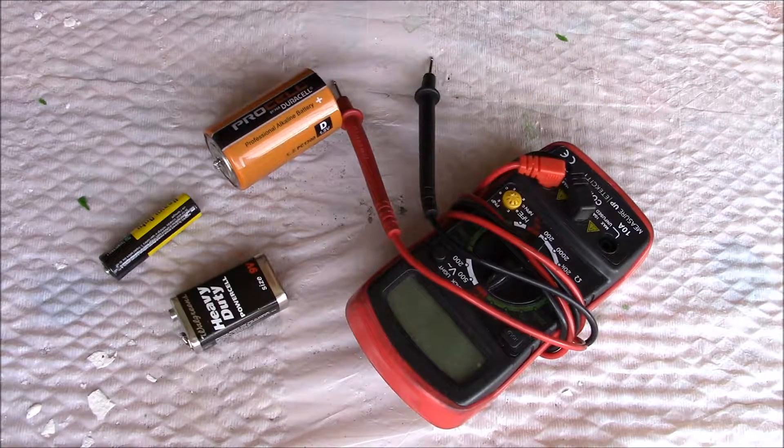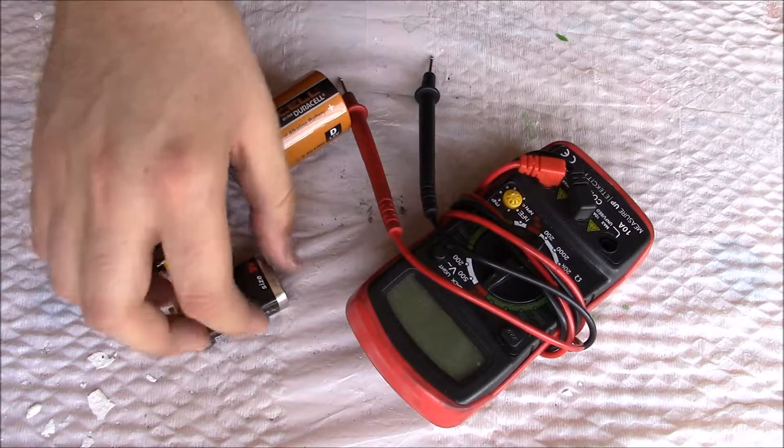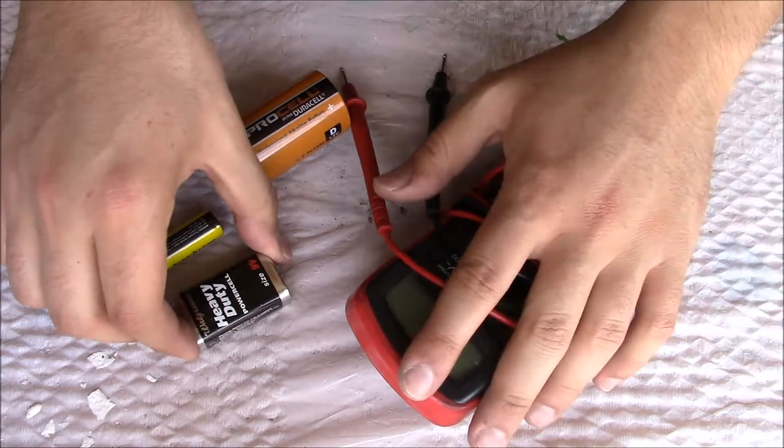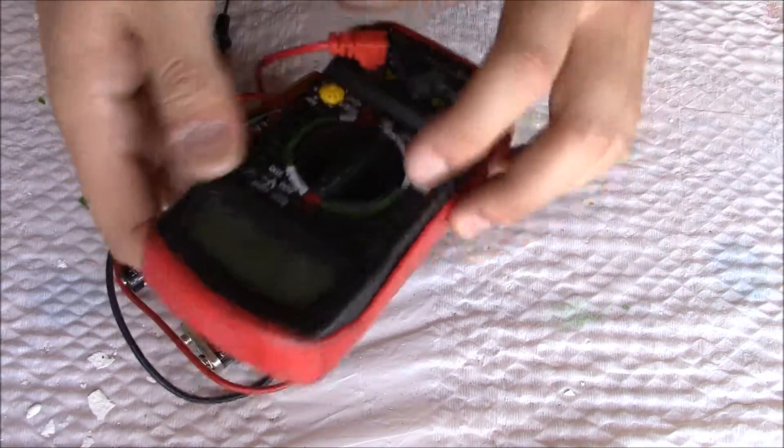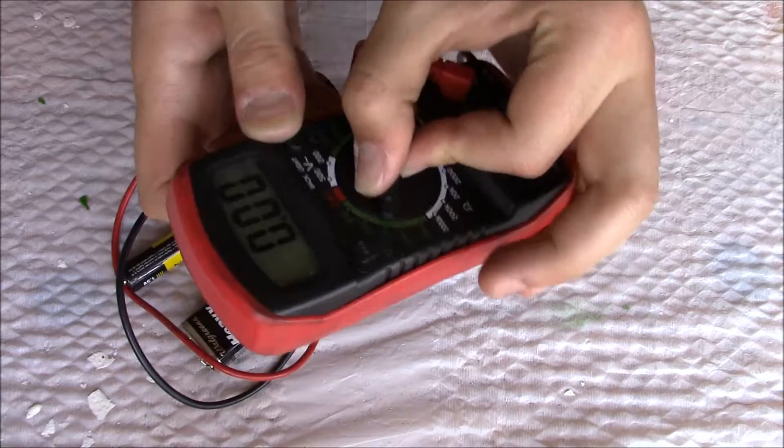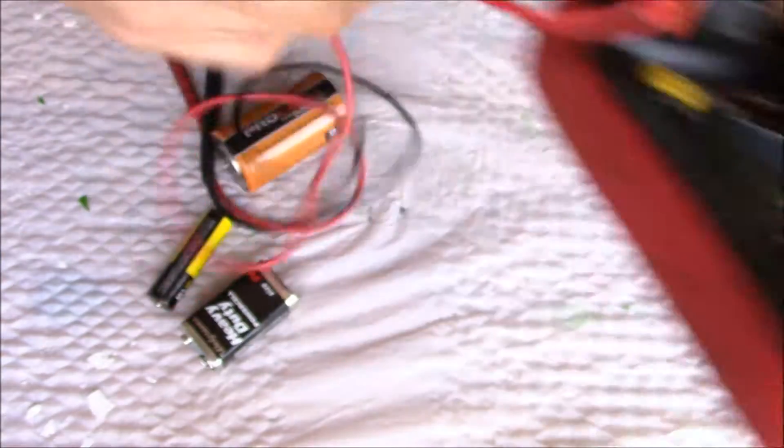What's up everyone, George here. Today I'm going to show you how to check if a battery is charged. All you need is a voltmeter or multimeter. I'm going to show you how to check it. Put it on 20 volts, DC volts on 20.